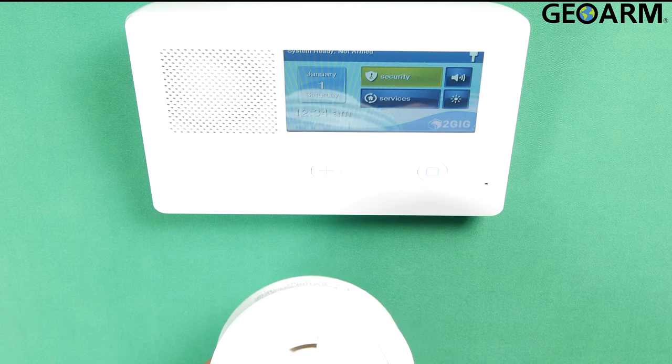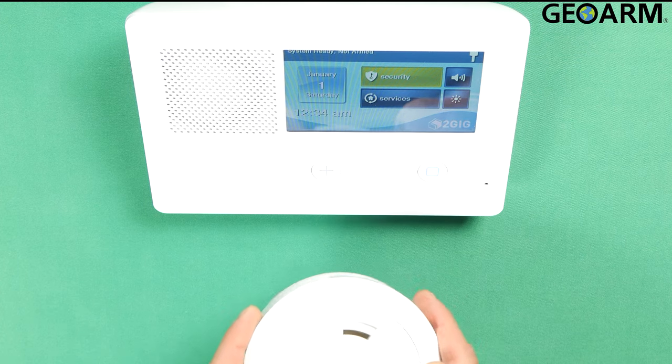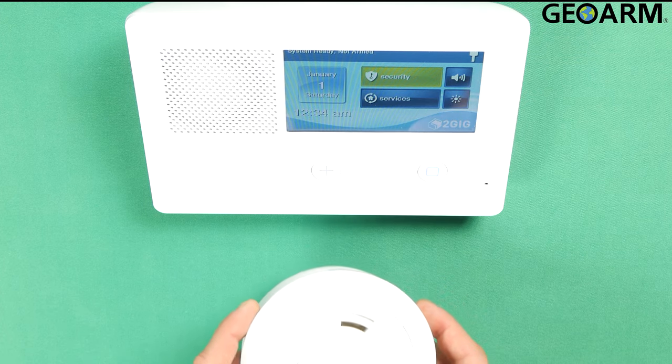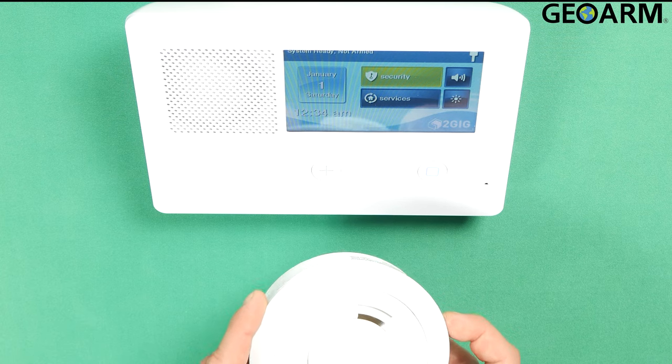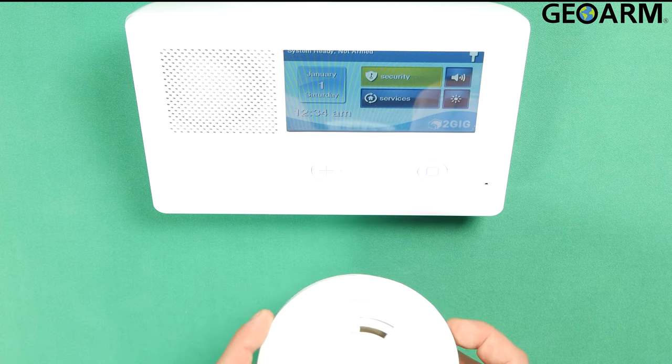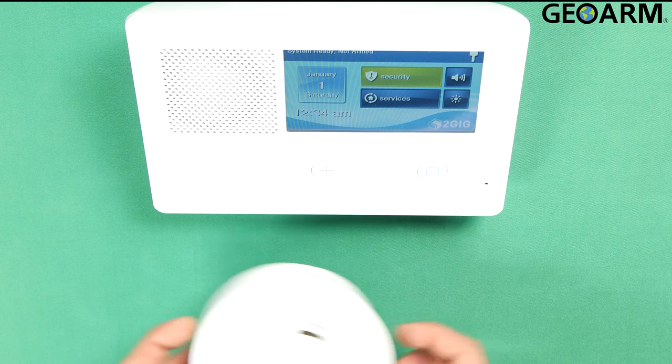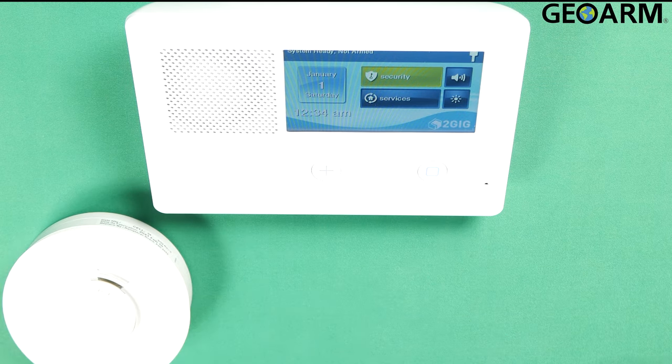Now the first thing you want to take into account is this is an E-Series device. The equipment code will start with the number 2. In this case it is 2058 for the equipment code and the loop number will be loop 1 for the smoke detector. So we'll go ahead and we'll start getting this thing learned in.